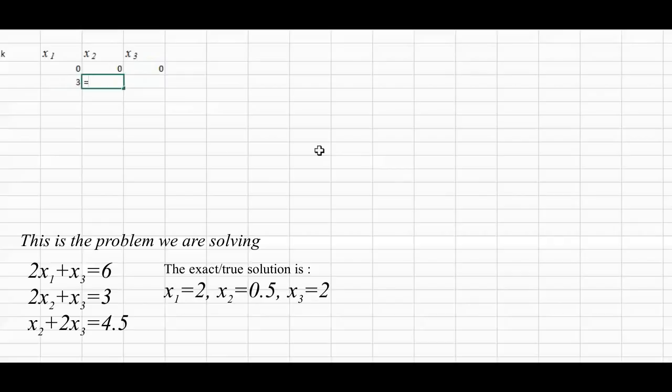The next one is similarly, that was 3 minus x3 again, bracket close, divided by 2 as well. So that's that one. This one is of course the same way. That one was 4.5 minus x2. So x2 is over here. Bracket closed and also divided by 2. So that gives us basically a Jacobi iterator, the first.